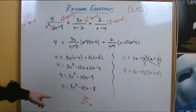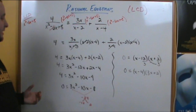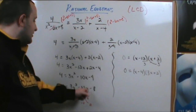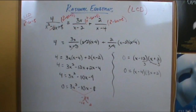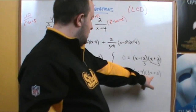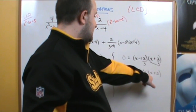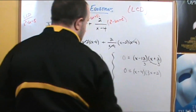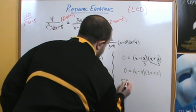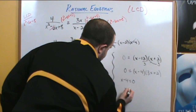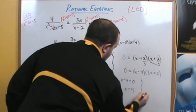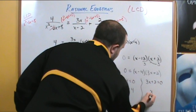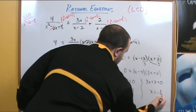This method can only be used after factoring out a GCF. Since there was no GCF to factor out here, we jumped right into it. Now we have the product of two binomials equal to 0: x minus 4 times 3x plus 2 equals 0. So either x minus 4 equals 0, giving x equals 4, or 3x plus 2 equals 0, giving x equals negative 2 thirds.